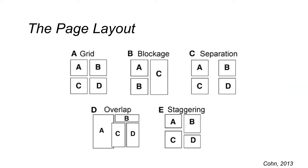Let's move into the second part, which is about the physical organization of panels, regardless of the content. Panels are spatially organized in a page, and they might be in a basic grid organization, there might be blockage — for instance, a big column placed next to two small ones — or panels might be separated from each other, or they might overlap. So there are several different organizations of panels.